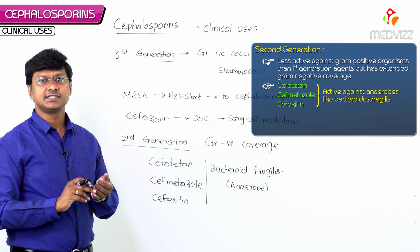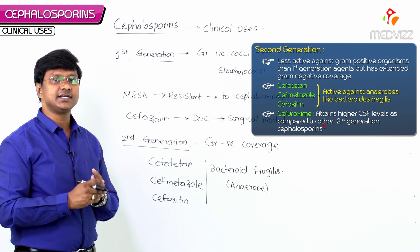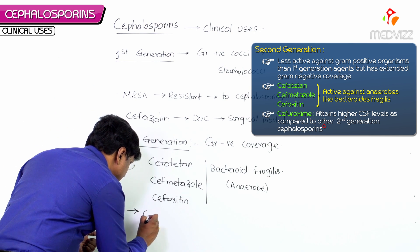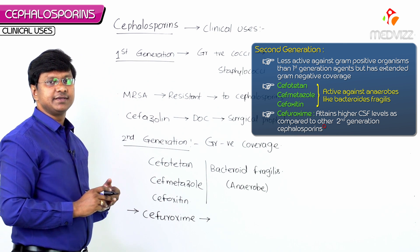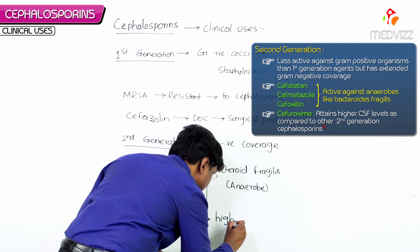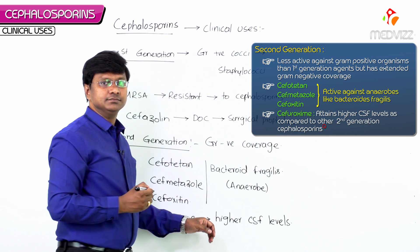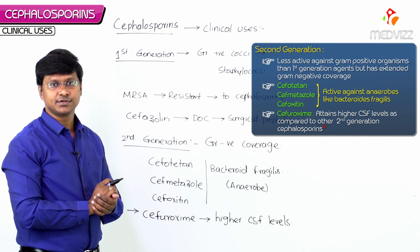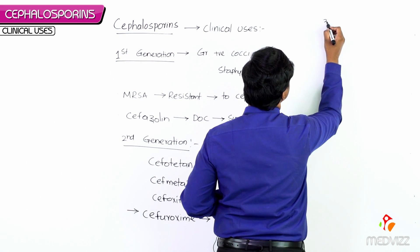Another important second generation cephalosporin is cefuroxime. Cefuroxime attains higher CSF levels compared to any other second generation cephalosporin — this is a key multiple choice question point.